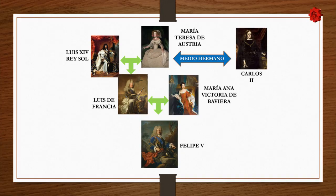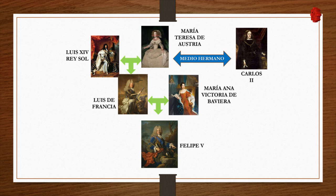Here I'll show you the family tree and explain the descent. Carlos II had a half-sister named María Teresa de Austria. She married Luis XIV, the Sun King. Together they had Luis de Francia, who married Mariana Victoria de Baviera, and they had Felipe V. Analyze these images and tell me: what was the relationship between Carlos II and Felipe V? Effectively, Felipe V was the grandnephew of Carlos II. This gave way to inheriting the crown and unleashing a conflict.